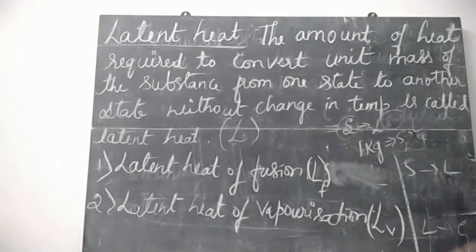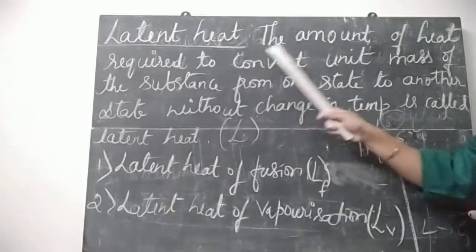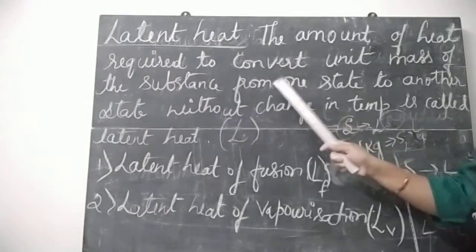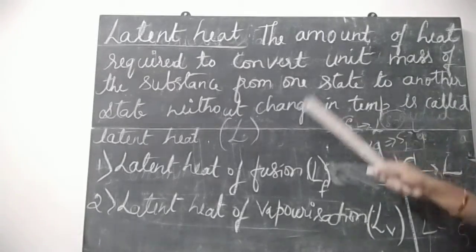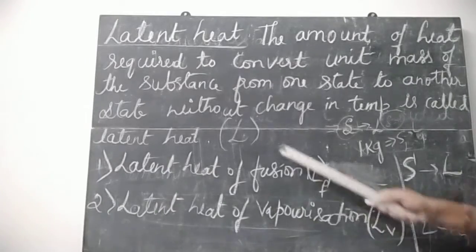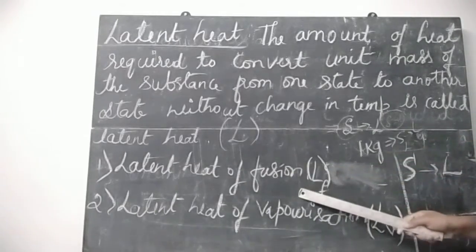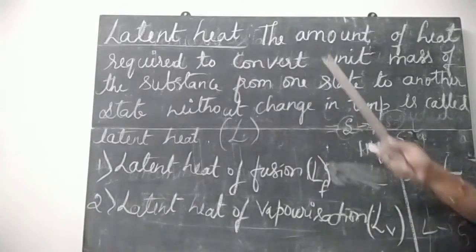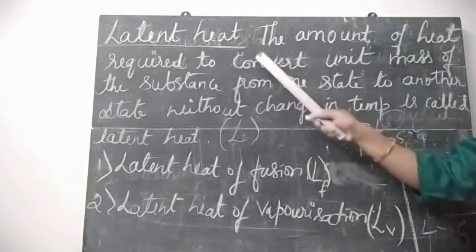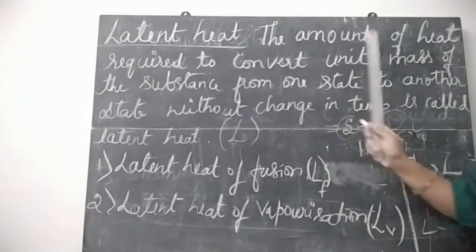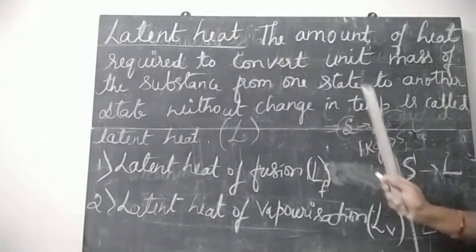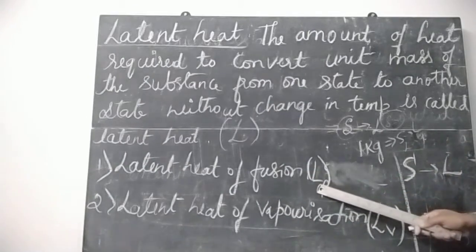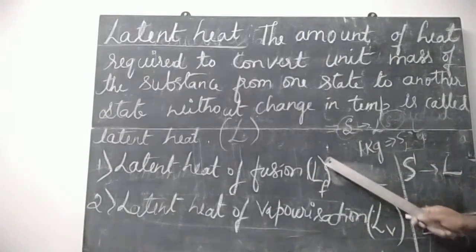Latent heat of fusion is the amount of heat required to convert unit mass of the substance from solid state to liquid state without change in temperature. That is called as latent heat of fusion, and it is denoted by LF.